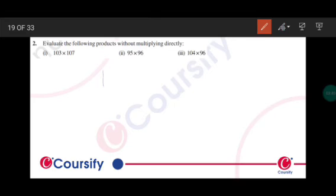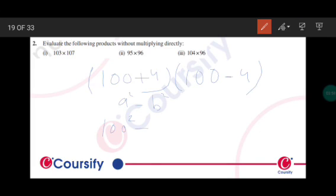Next part is 104, which is 100 plus 4, into 96, which can be read as 100 minus 4. So this is the property a plus b into a minus b. So this will become a squared minus b squared. So 100 squared minus 4 squared. So this is 10,000 minus 16, which equals 9,984.